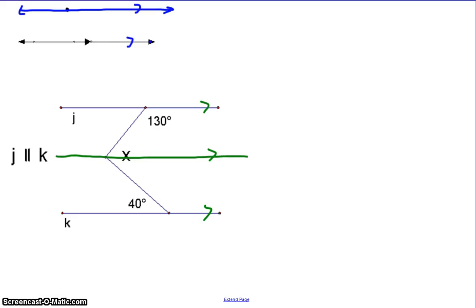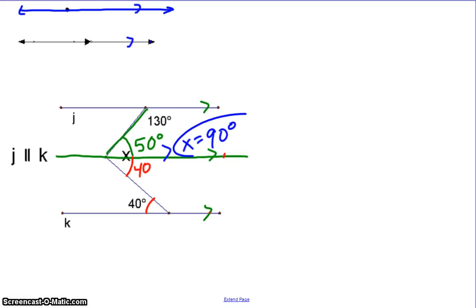Now we can use parallel lines properties. Because the 130° angle and the top part of x are on the same side of the transversal, they are same-side interior angles, meaning they are supplementary. And because the 40° angle and the bottom part of x between the two parallel lines are alternate interior angles, they are congruent. Therefore, the measure of angle x is 90 degrees.